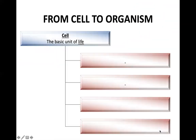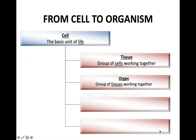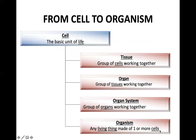From the cell to the organism, the smallest structural part is the cell — it is the basic unit of life. When we gather different cells that share the same function, we have a tissue. A tissue is defined as a group of cells working together with the same function — never forget they must have the same function. Then, if we gather tissues together, we get an organ — a group of tissues working together. Then we have the organ system, which is a group of organs working together. Finally, when we assemble these different organ systems, we get an organism, which is a living thing made of one or more cells.